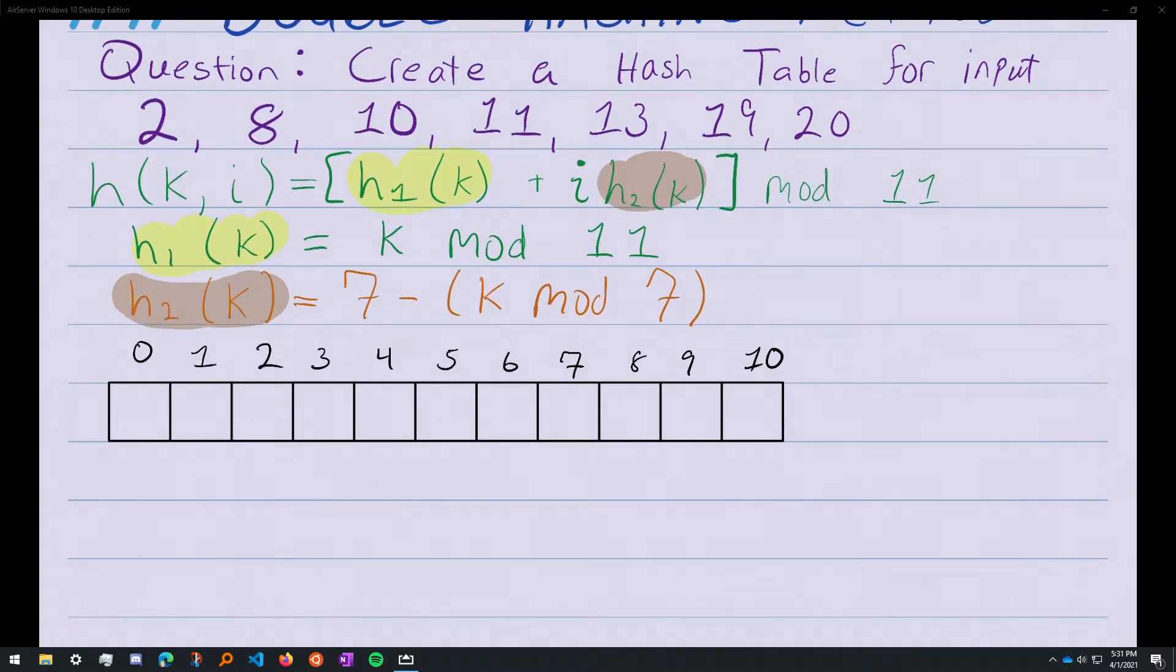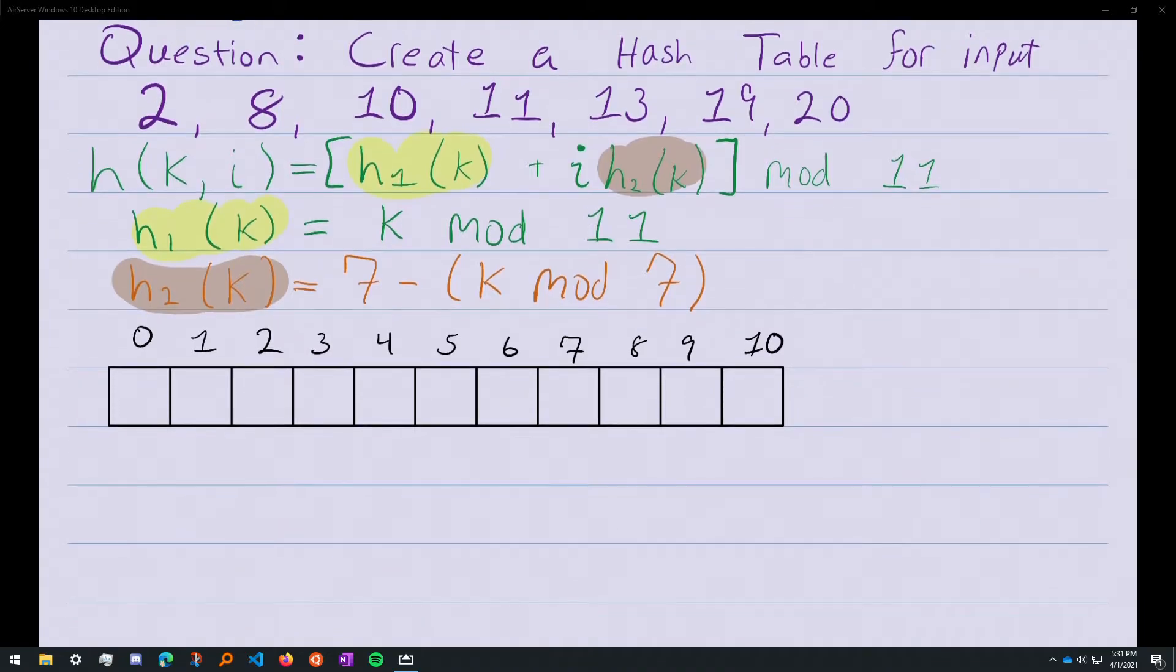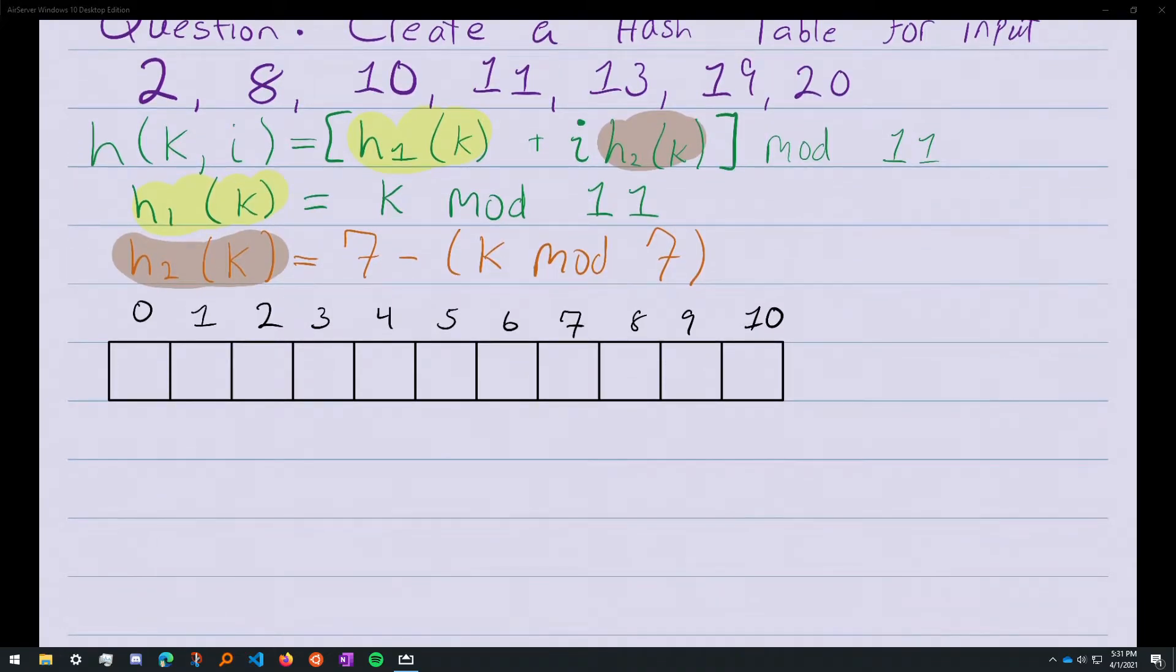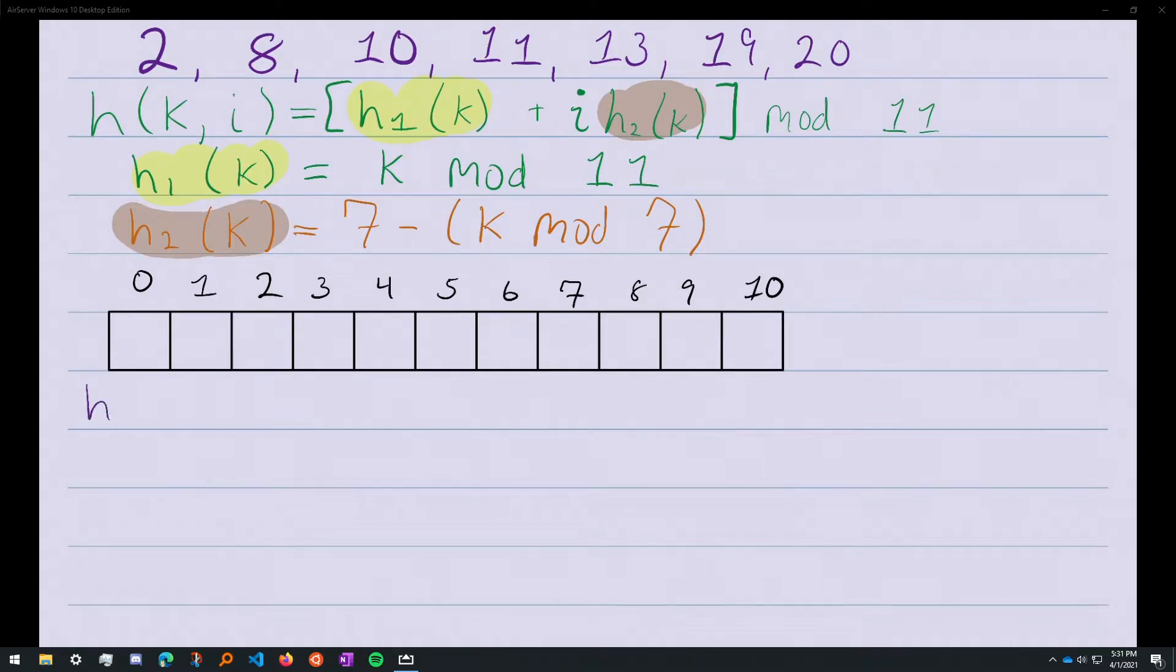Let's begin by trying to add 2. h(2,0) - our i is 0 because we haven't tried to put 2 into the array yet. It has not collided. This equals 2 mod 11, which equals 2. Before putting 2 in, we check: is there a collision? No. So we put it.